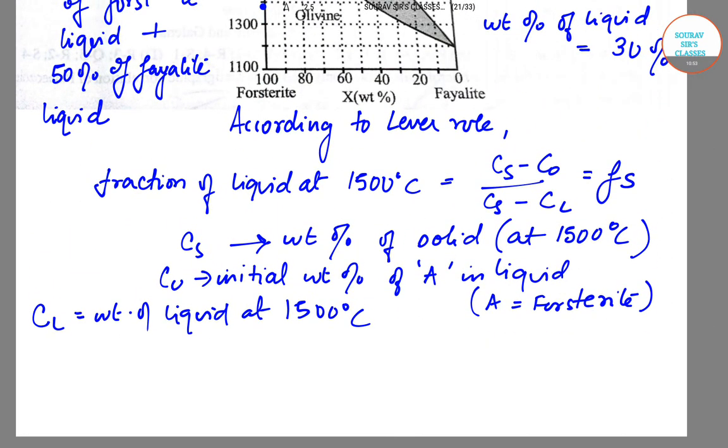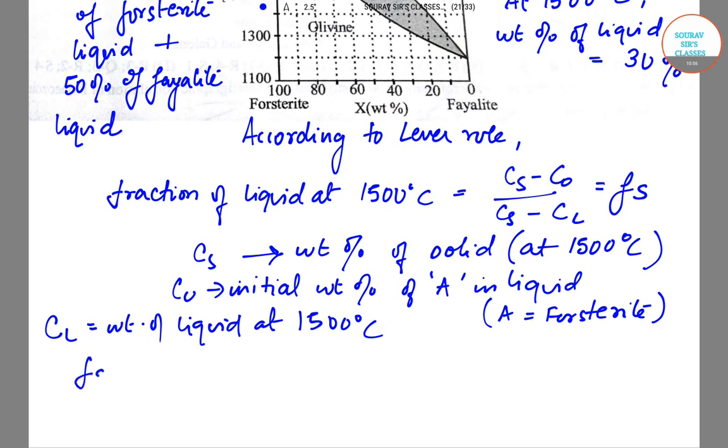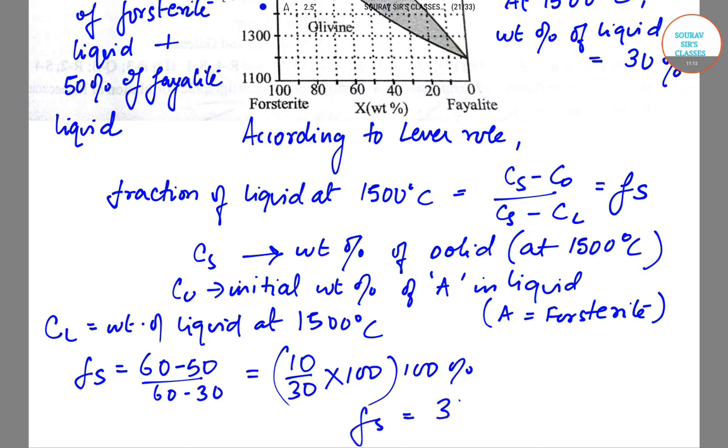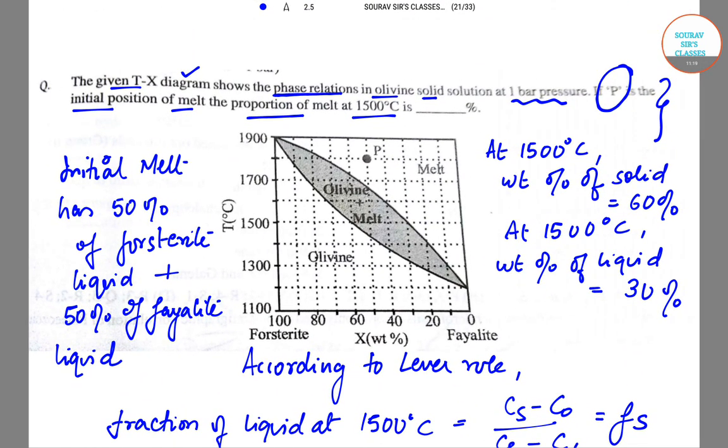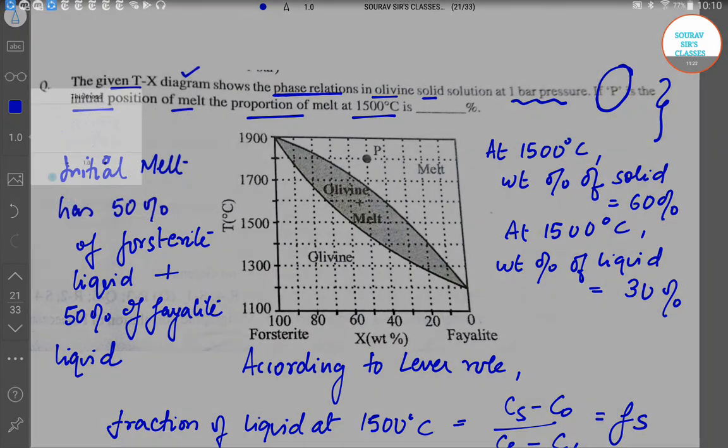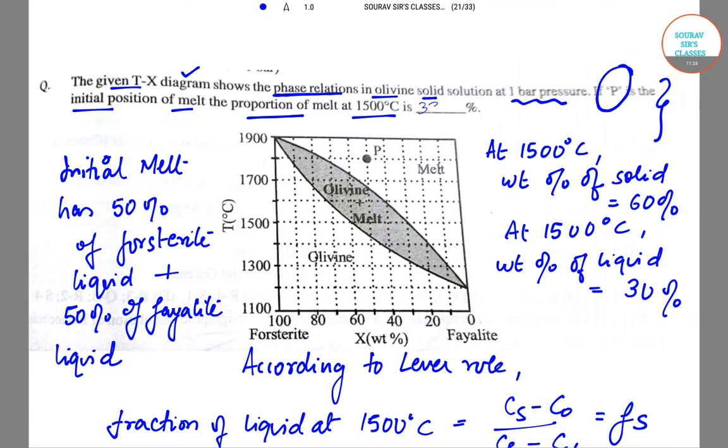So let us calculate Fs. Fs equals 60 minus 50 by 60 minus 30. This equals 10 by 30 into 100 because we need to convert it into percentage. So Fs equals 33.33 percentage. This will be the answer.